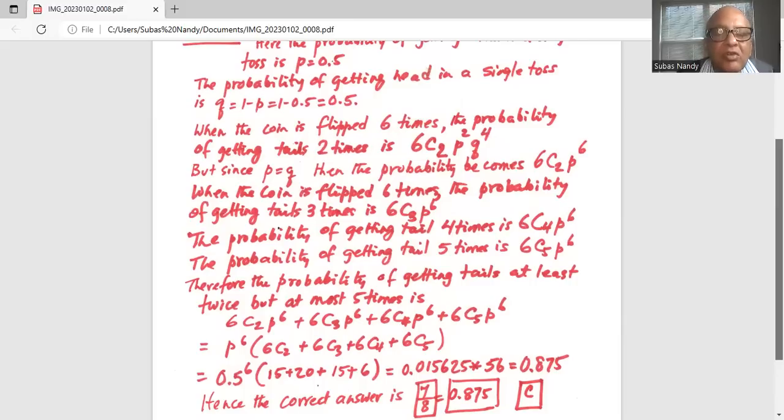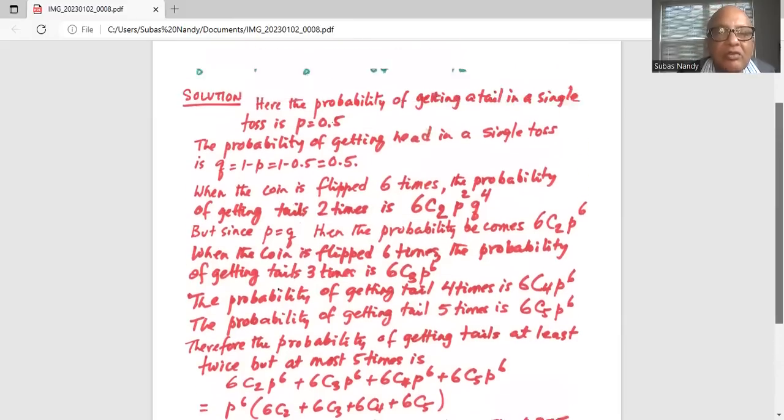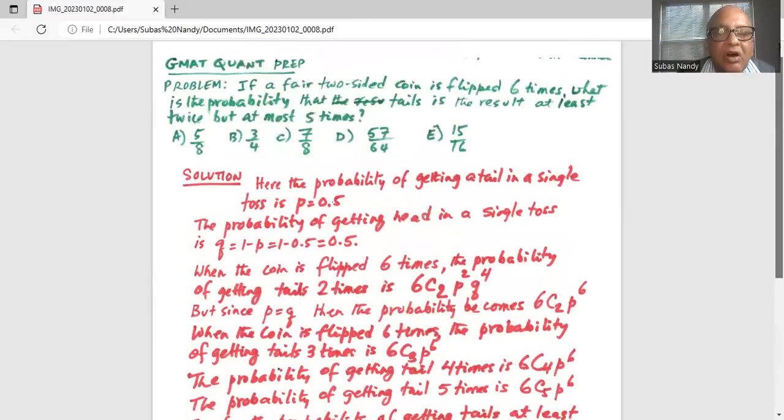Now 7 over 8 is 0.875. So the correct answer is option C.